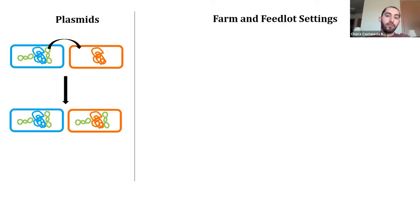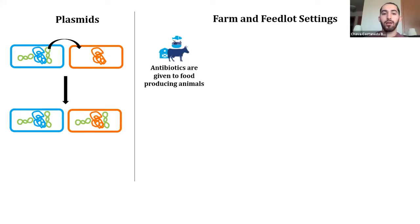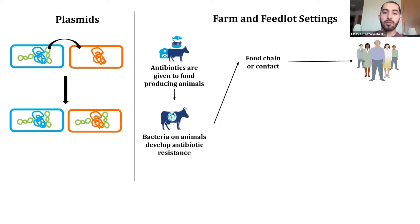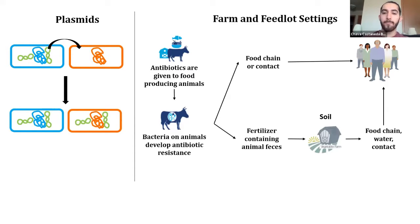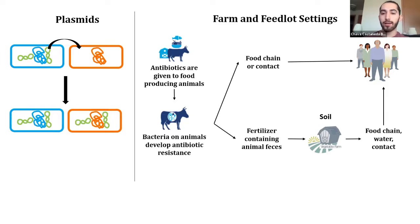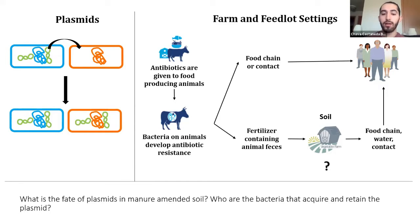If the blue bacteria was originally resistant to an antibiotic because that gene was carried on the plasmid, then now both the blue and the red bacteria are resistant to that antibiotic. Our increased understanding of how plasmids contribute to antibiotic resistance spread has made it more important to understand the environments where spread is prevalent and which could be contributing to the spread of resistance plasmids to human pathogens. One such setting is farms and feedlots, where the overuse of antibiotics in food-producing animals drives resistance development. The antibiotic resistant bacteria and genes can reach humans through the food chain, contact, or through fertilizer containing animal feces applied to agricultural soil.